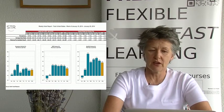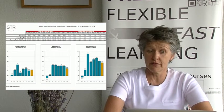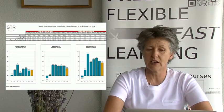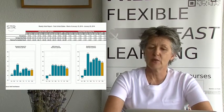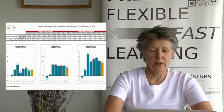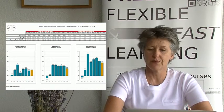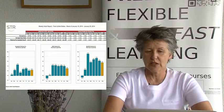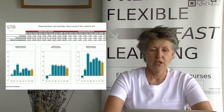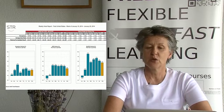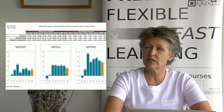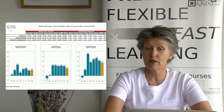We can see the occupancy variance in the first graphic, the ADR variance in the second, and then the RevPAR variance — all broken down by day of the week. Interestingly, something is happening on Sunday and also on Tuesday and Friday. We would want to look in more detail to understand what these graphics are telling us and how to use this information to improve future revenue performance.